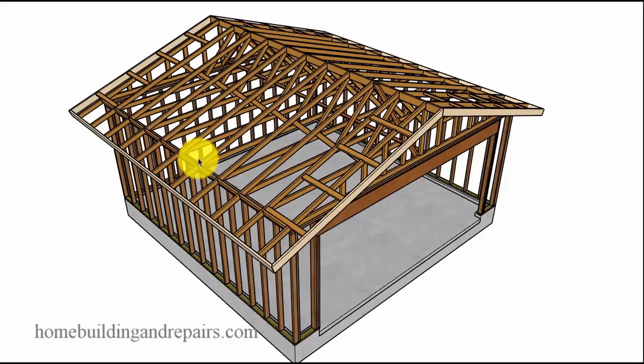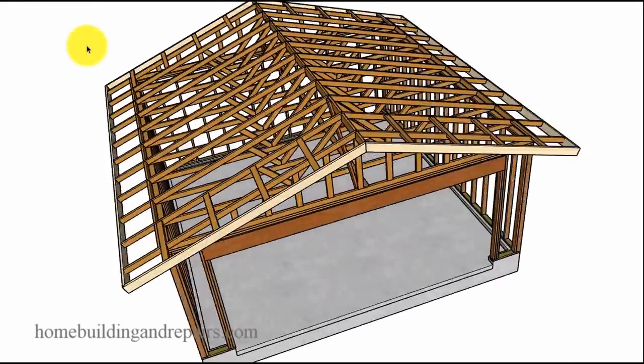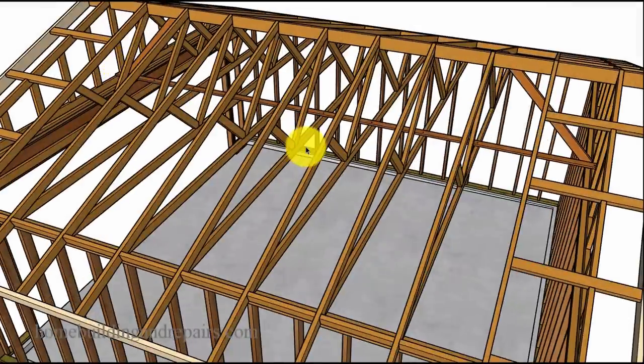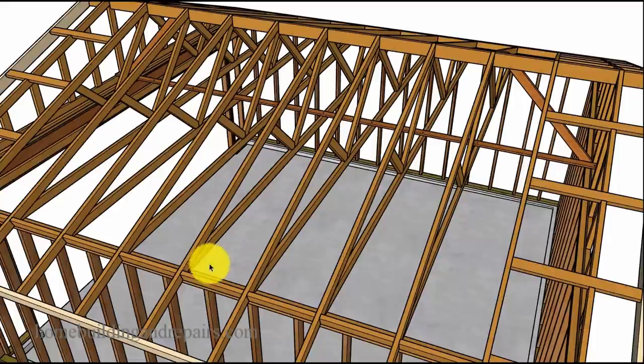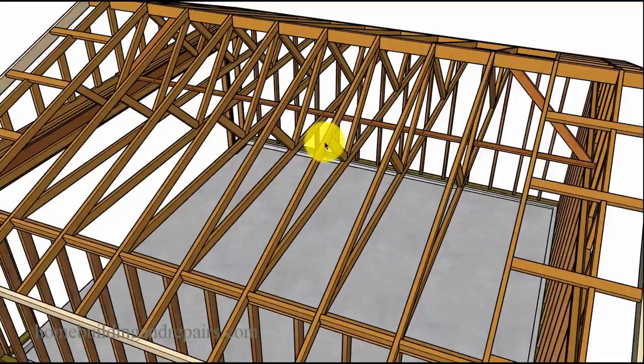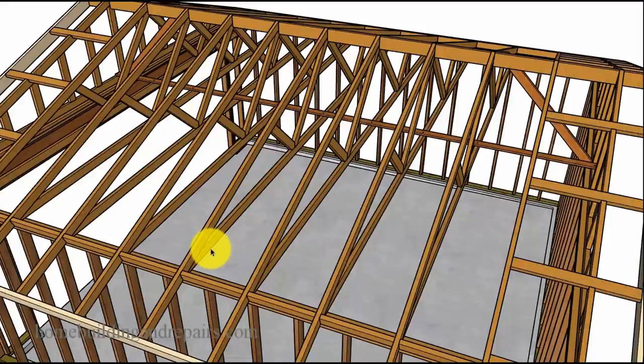Now the scissor truss will be difficult to get into a building that already has sheathing on it, and really there's only two ways you're going to be able to do it. Take the sheathing off in a certain area or remove a section of the wall to where you can get the truss in there. So it is possible but the amount of damage required to the building might be extensive.